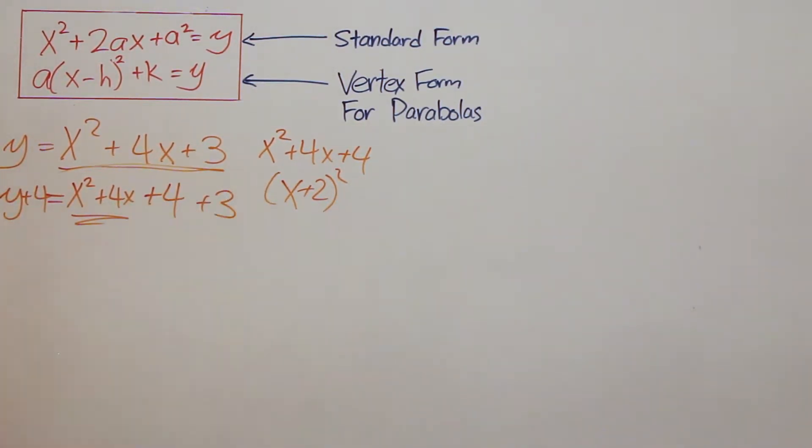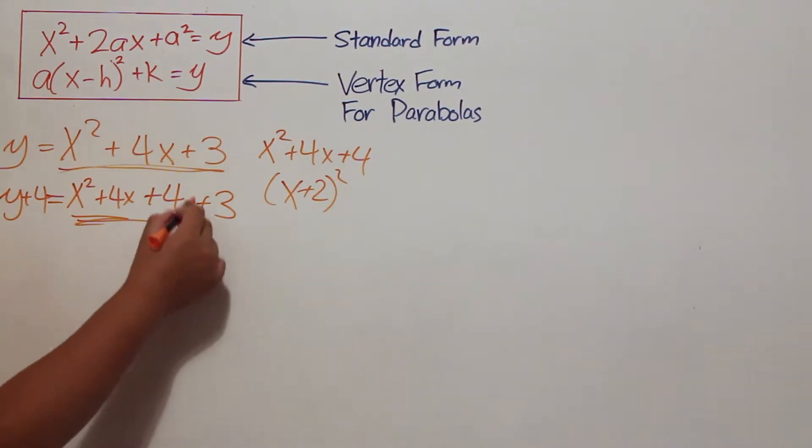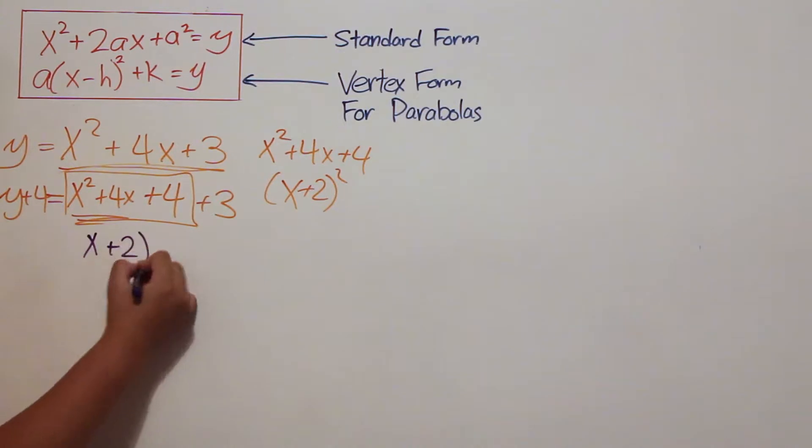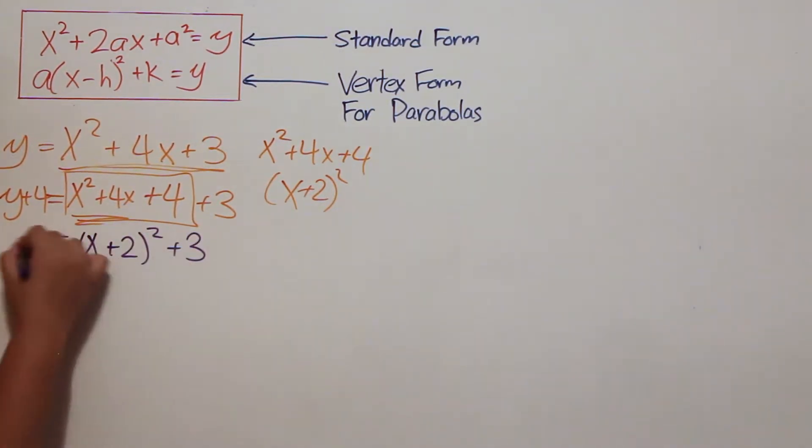By doing so, we result with y plus 4 equals x squared plus 4x plus 4 plus 3, which simplifies to y plus 4 equals quantity x plus 2 squared plus 3.